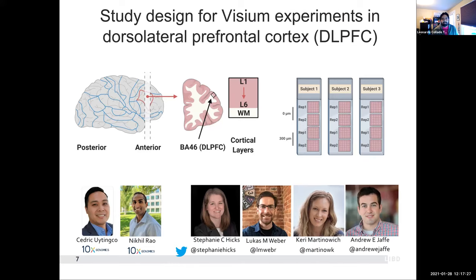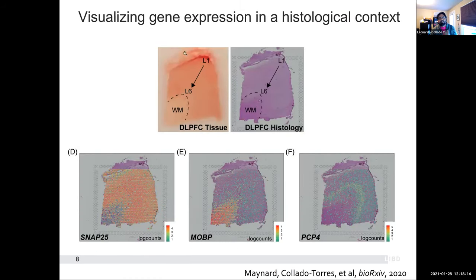This project involved people from 10x Genomics and a very diverse team for us, which included me with more computational experience, Kristen Maynard who had a lot of experience with these experimental assays, and Kerry Martinowich. We then brought in Stephanie Hicks and Lucas Weber from the Hopkins Department of Biostatistics, because we also needed help with new methods. The image on the left shows a slice of tissue that was provided to us, where you zoom in to see where the cell bodies are.